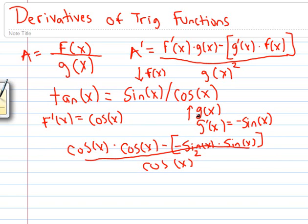So this is the answer, not the final answer that you memorized, but we can do some simplifications and get that answer. So multiply the cosines, negative sine of x times sine of x is negative sine of x squared, but again we have this negative.